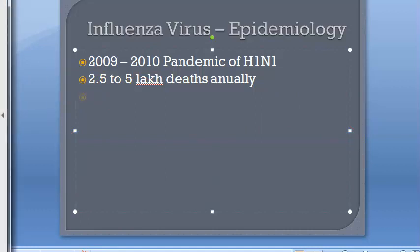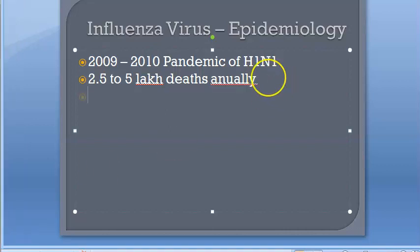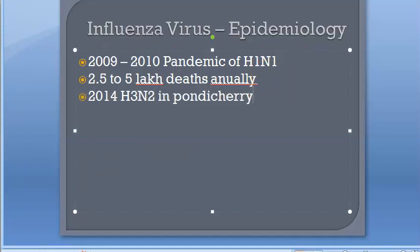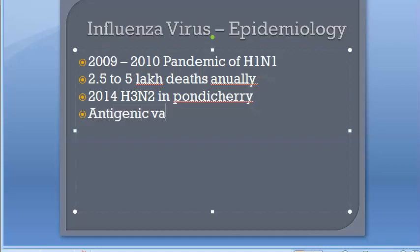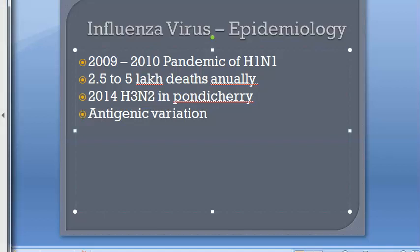In 2014 there was H3N2 in Pondicherry. The epidemiological pattern depends on the nature of the antigenic variation that occurs in influenza types. Antigenic variation is a very important concept and also a common exam question.